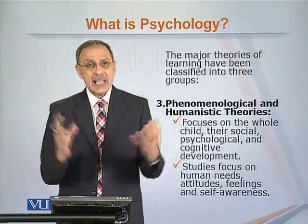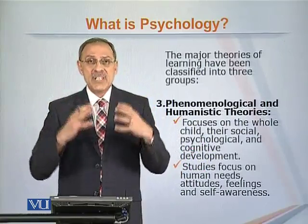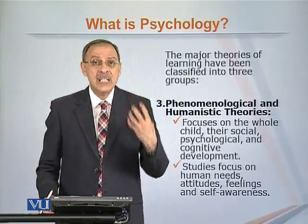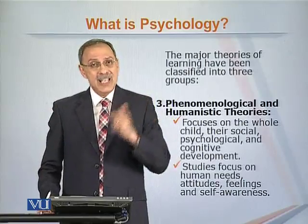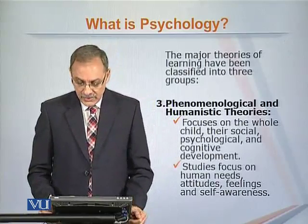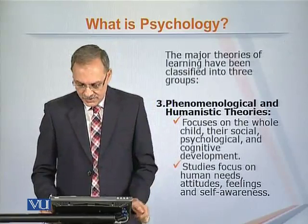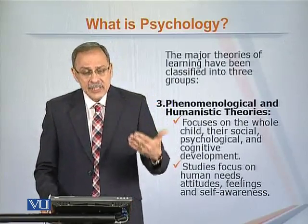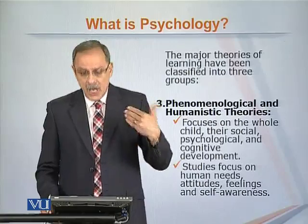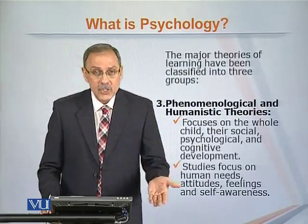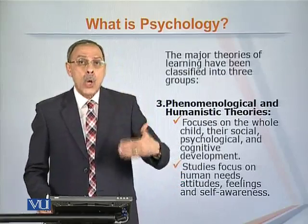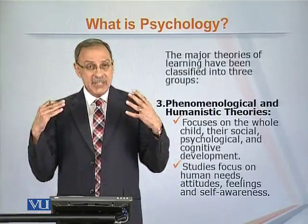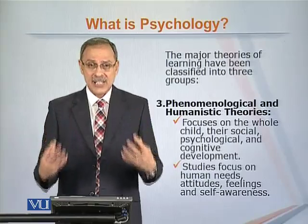Therefore, looking at the whole child and encompassing all aspects to get this child to develop as a holistic individual is the focus of these theories and theorists. So they look at social development, cognitive development, psychological development — all aspects — because you want individuals to be well-rounded in society.